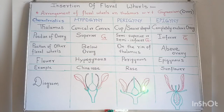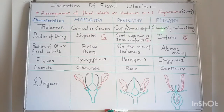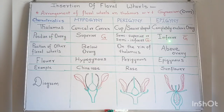The last type is epigyny. The word 'epi' means above and 'gyny' means gynoecium or ovary. In this type, the thalamus completely encloses the ovary — so the thalamus surrounds the ovary entirely. The ovary occupies the inferior or lowest position compared to the other floral whorls.